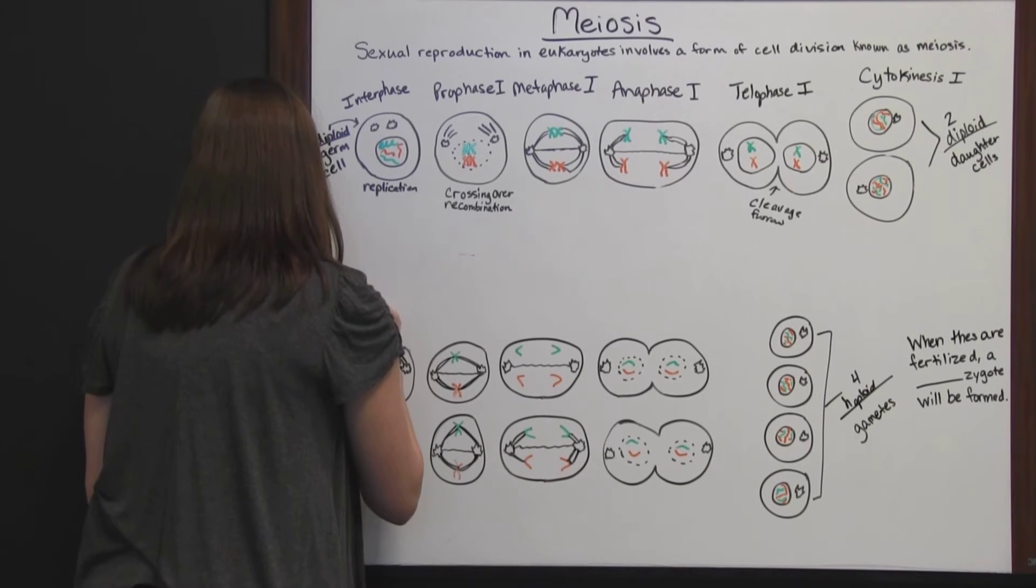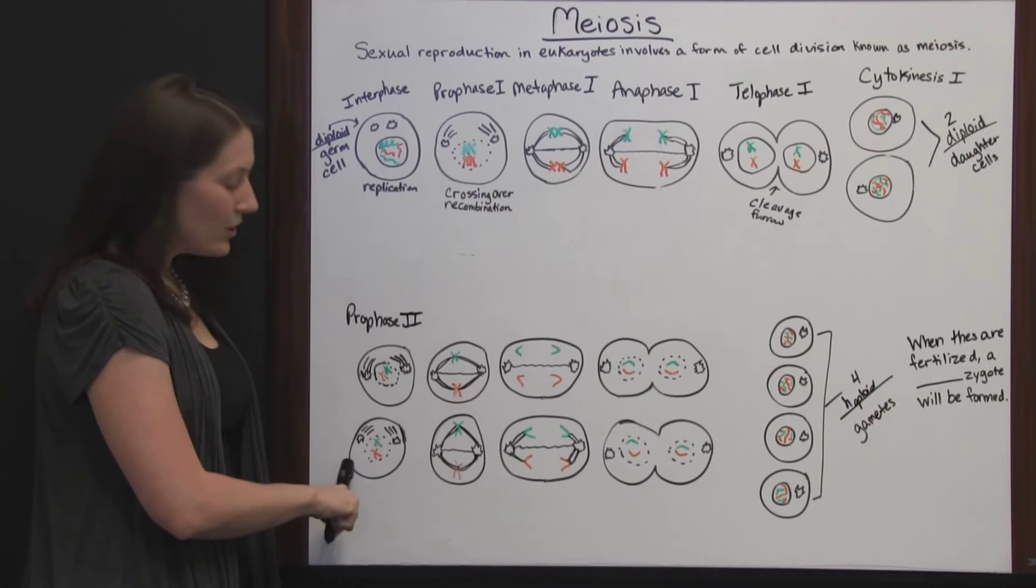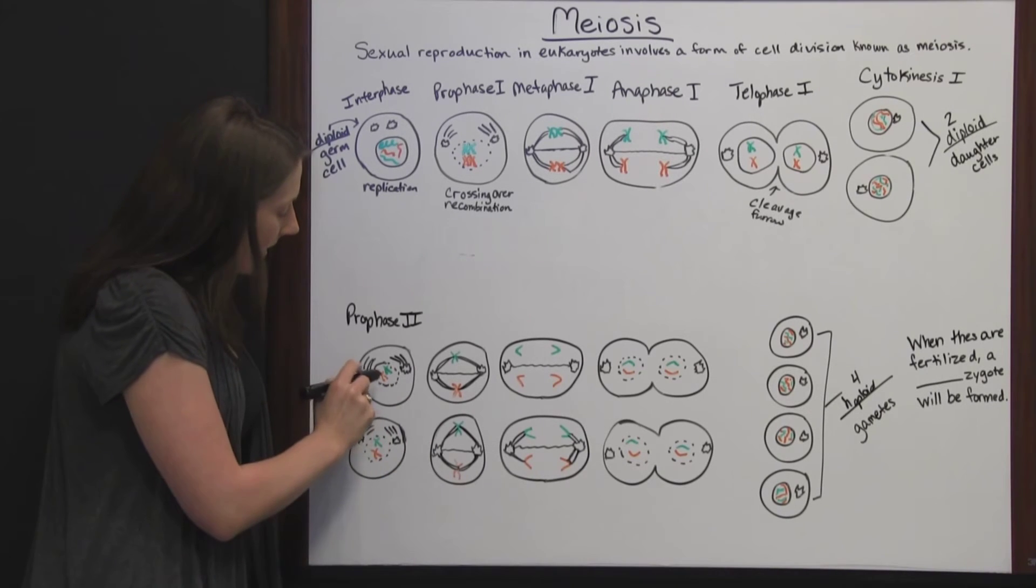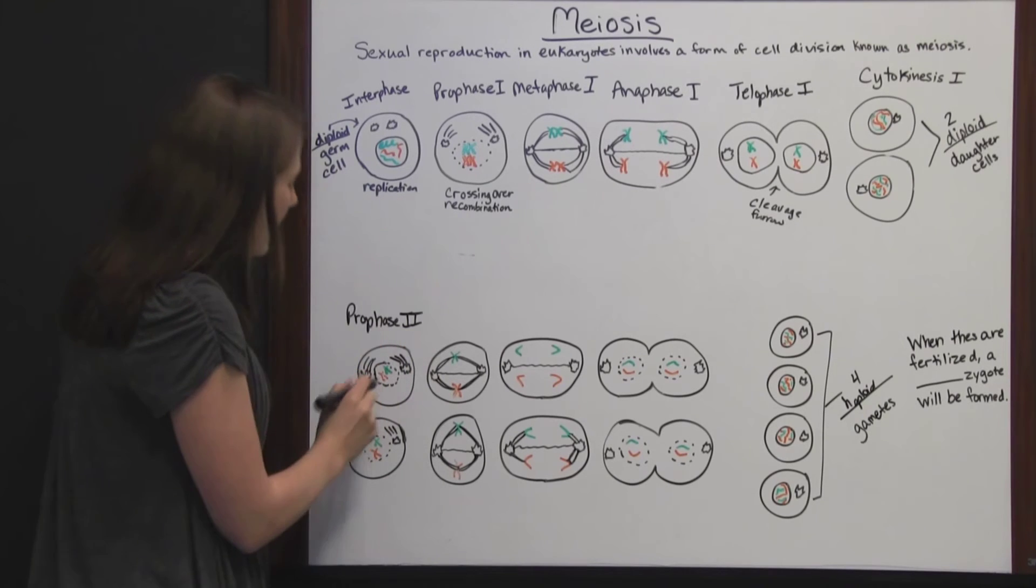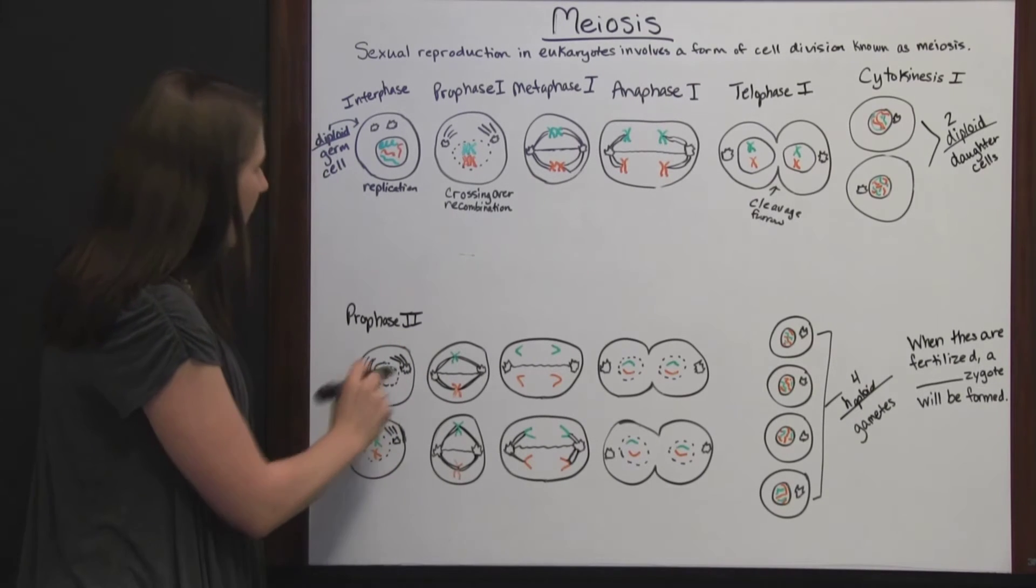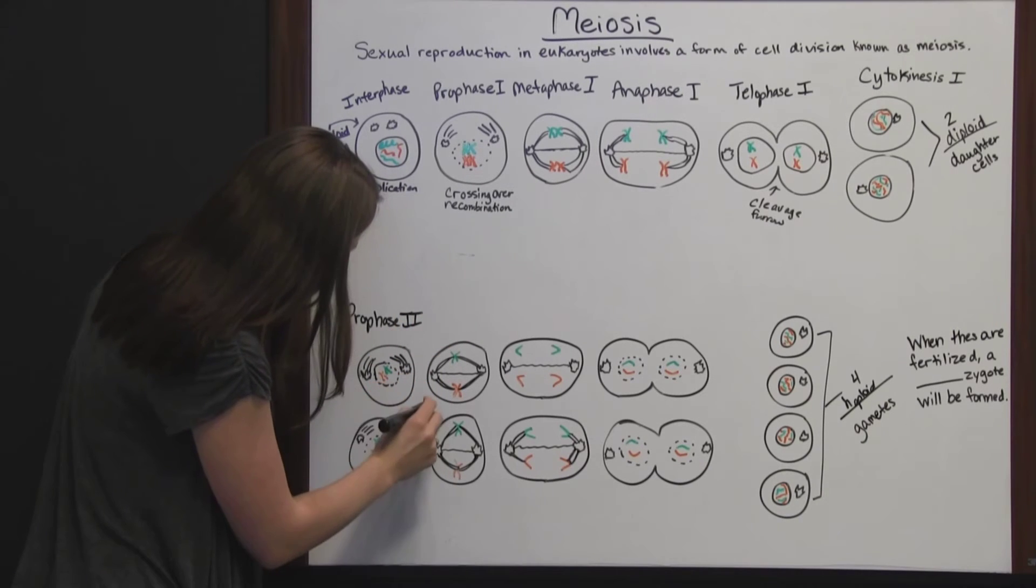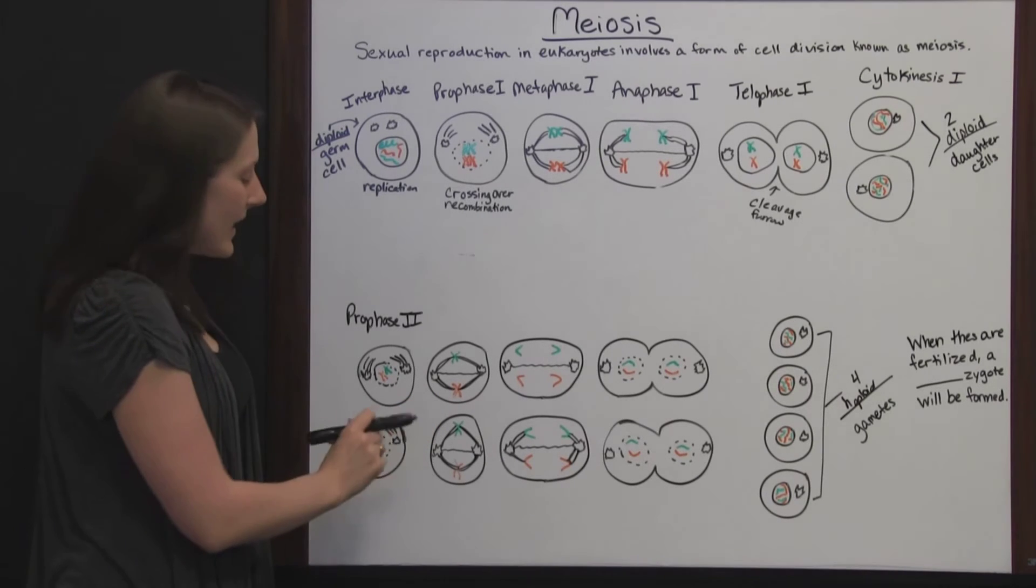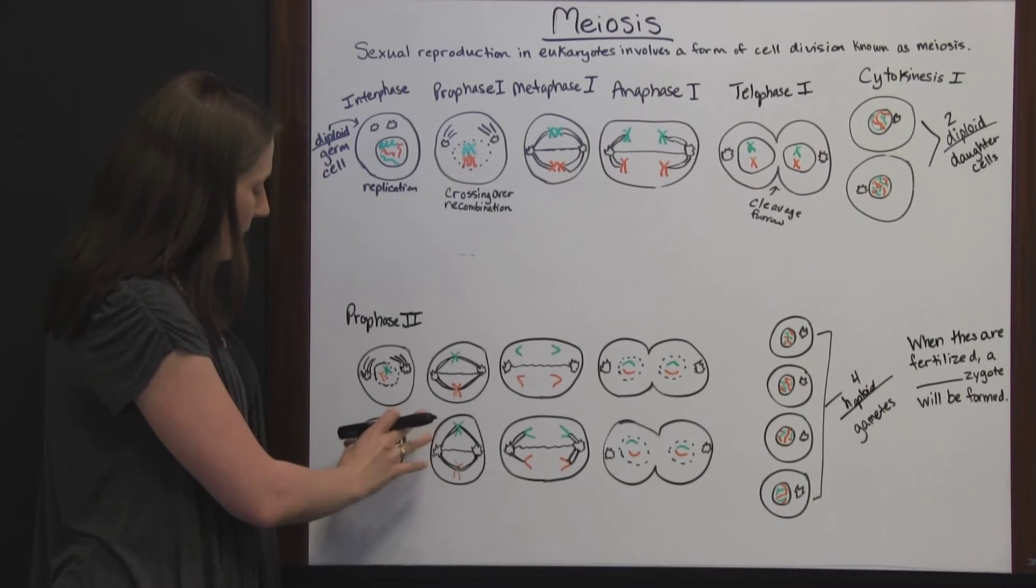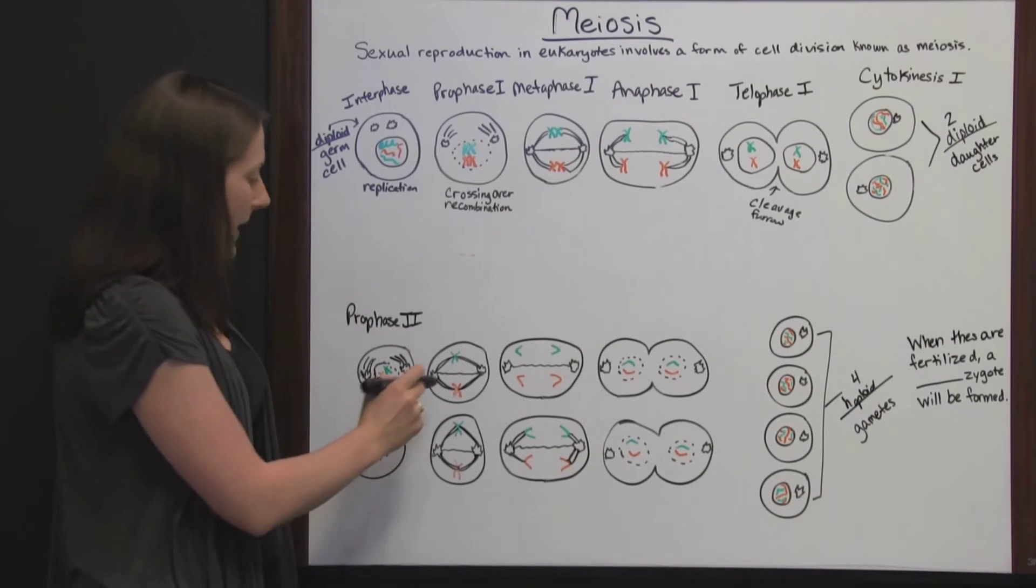In prophase II, the two daughter cells repeat the same process that happened in meiosis I. There's no replication because that was in interphase, but the centrosomes move to either side and out to opposite poles of the cell, starting to pull the chromosomes in that direction.